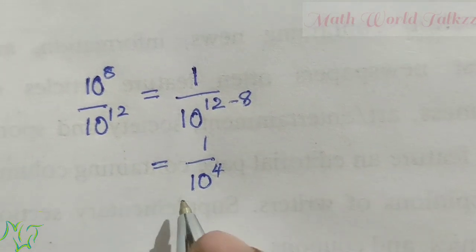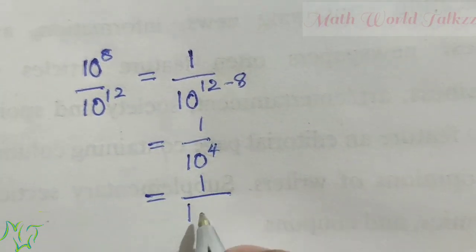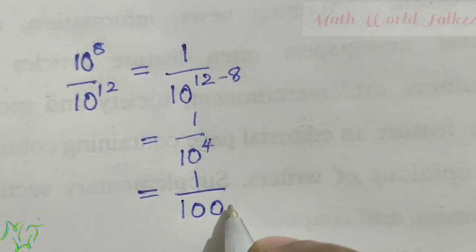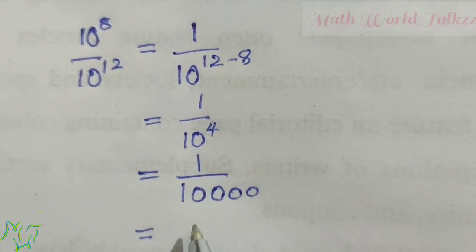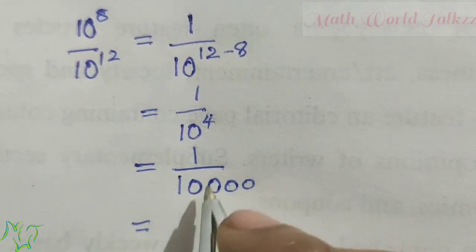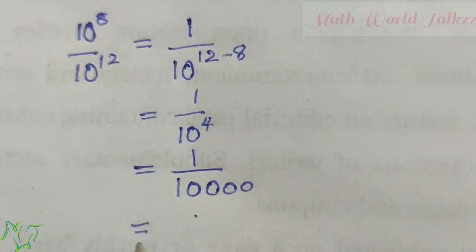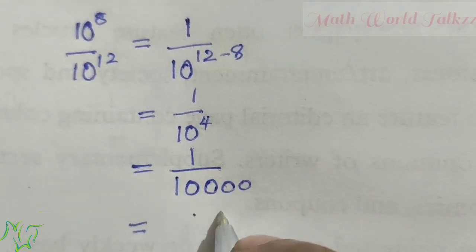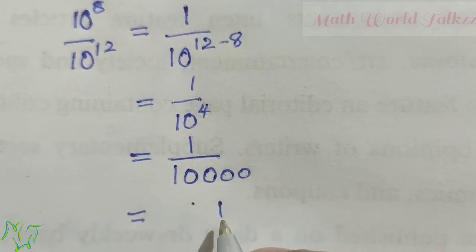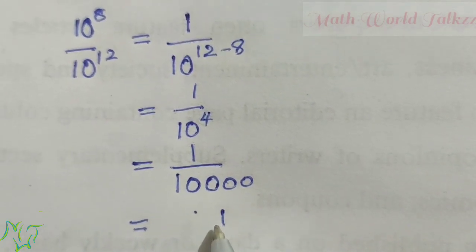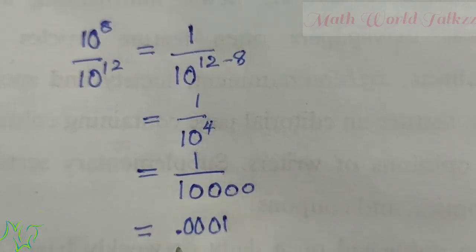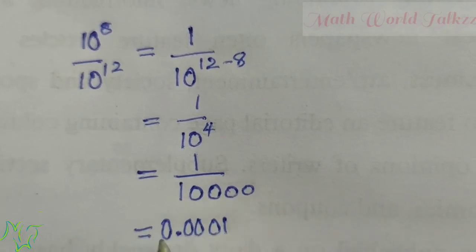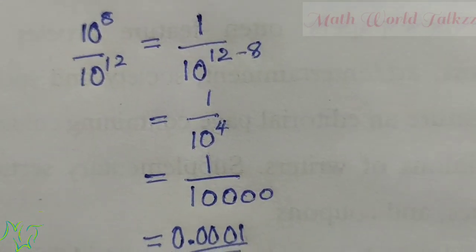10 raised to 4 means 10 into 10 into 10 into 10, multiplied 4 times, so 1 by 10000 — after 1 we write 4 zeros. To convert to decimal, write the numerator first, then place the decimal point with as many zeros as in the denominator. So the answer is 0.00001.